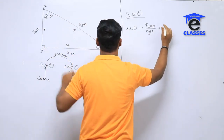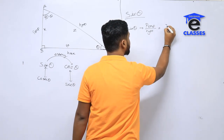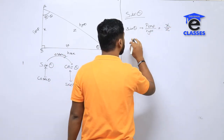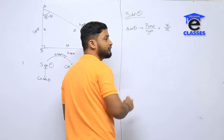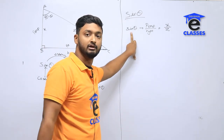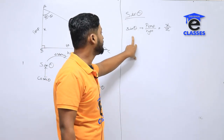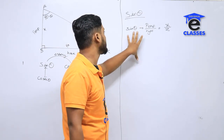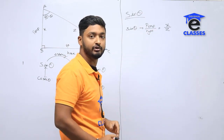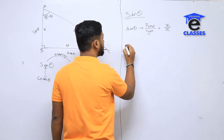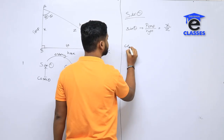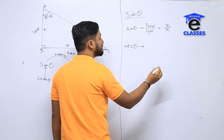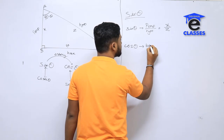Sin theta equals x by z. Sin theta equals perpendicular over hypotenuse — that is x by z. Cos theta equals base by hypotenuse.